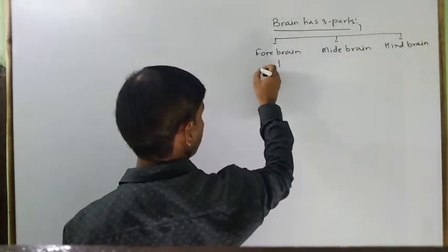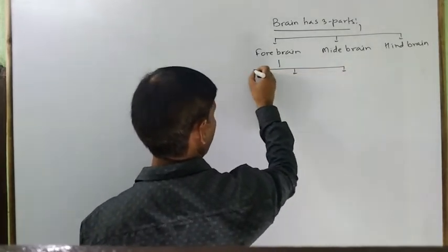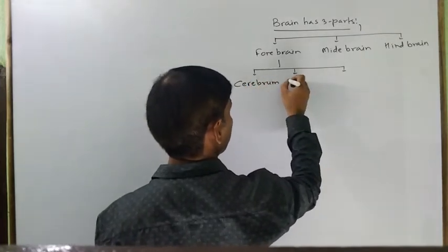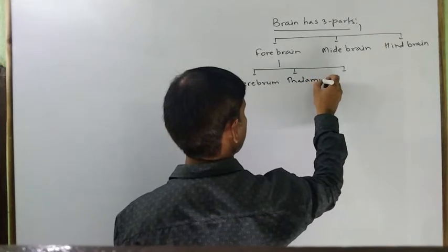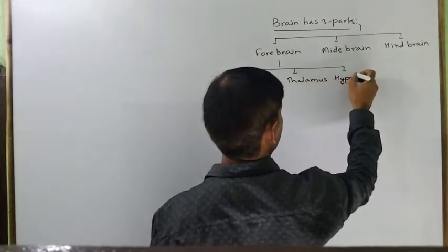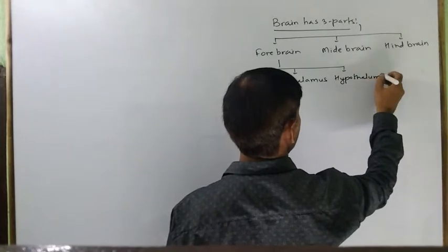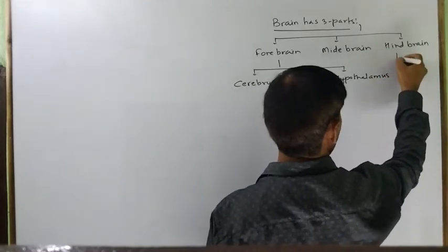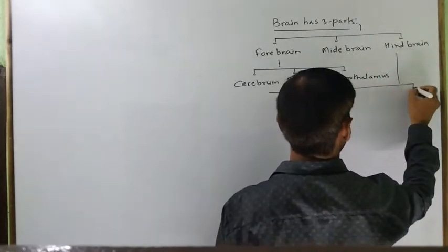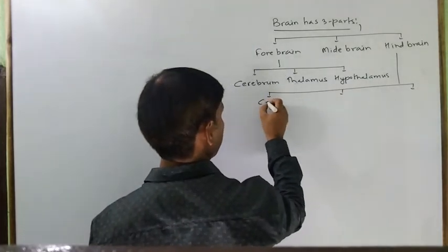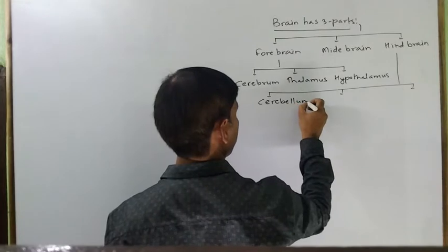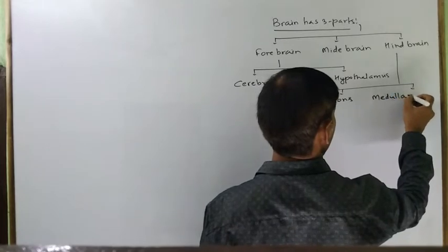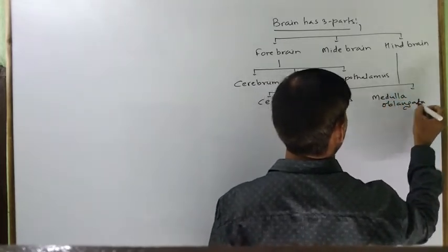Forebrain में कौन कौन से parts आते हैं? इसमें आता है Cerebrum, Thalamus और Hypothalamus। जबकि Hindbrain में Cerebellum, Pons और Medulla Oblongata हैं।